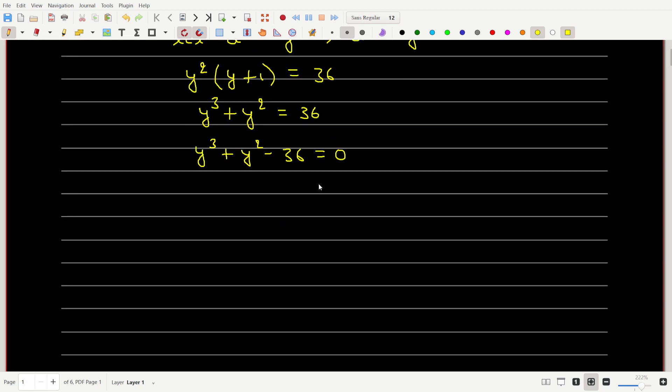So we have a cubic equation here, and to solve a cubic equation we will use the trial and error method. We will substitute different integers for y and try to figure out the first root. A cubic equation has either one real root or three real roots, and usually the kind of problems we get at this level, one of the roots is an integer.